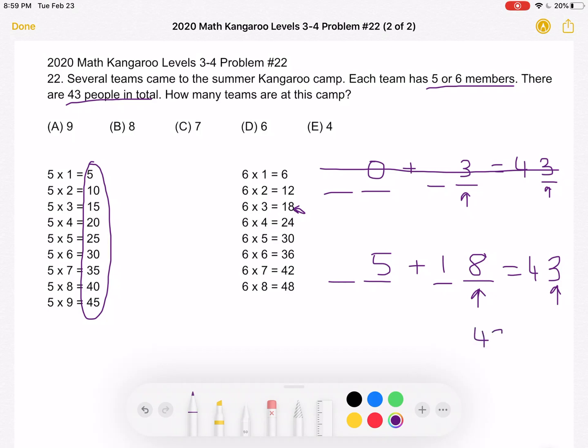What's 43 minus 18? Well, you can see that that's 25. So our multiple of 5 is 25.